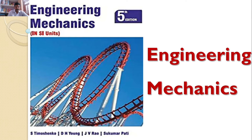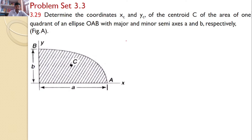Welcome to RK Tutorials. Solutions to Engineering Mechanics by Ashtimushenko, 5th edition. In this tutorial, we will discuss problem set 3.3 and problem number 3.29: Determine the coordinates XC and YC of the centroid C of the area of one quadrant of an ellipse OAB with major and minor semi-axes A and B respectively.